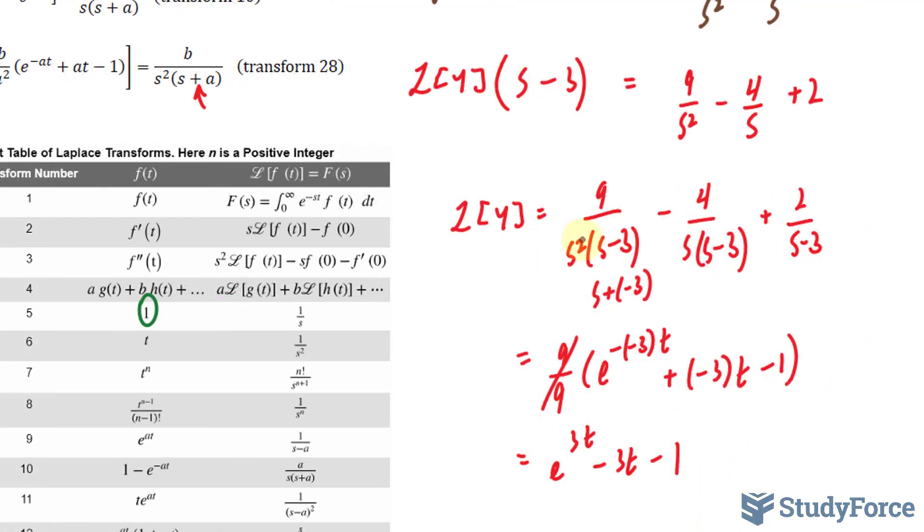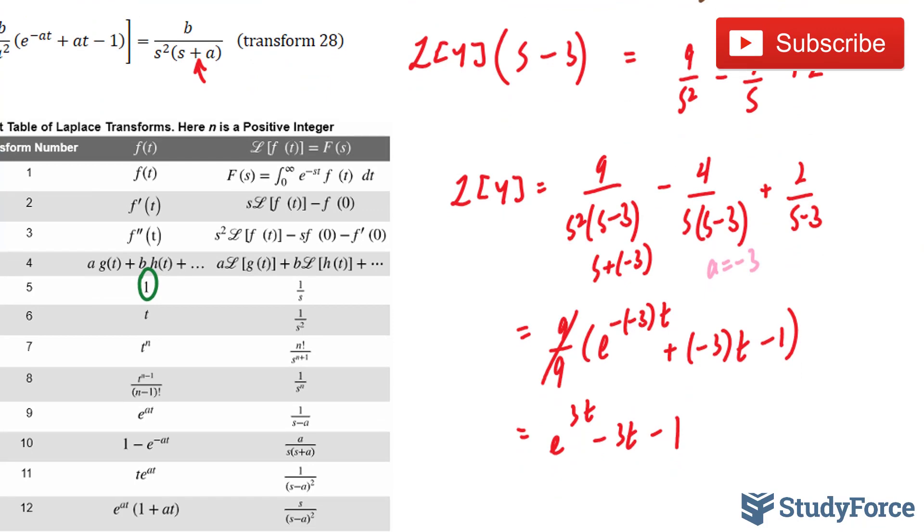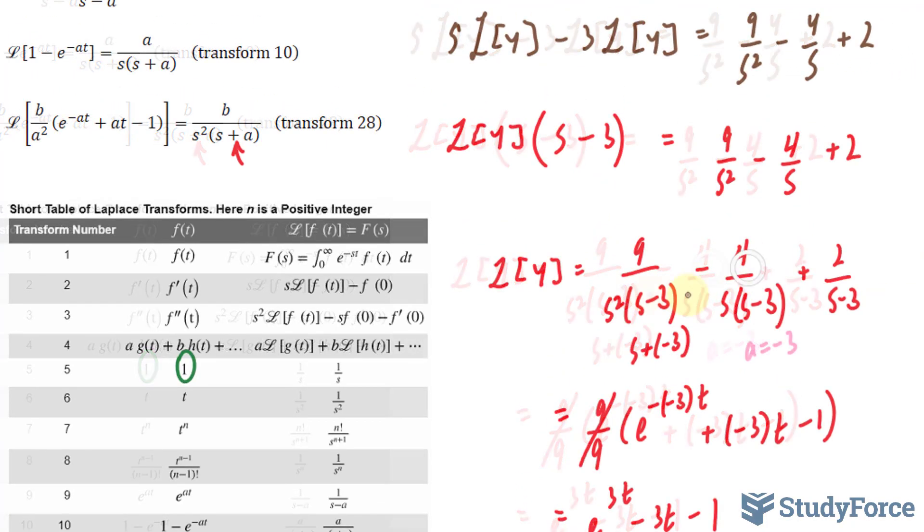All of this represents this term. Now this term: we have −4/(s(s − 3)). Like I mentioned, this matches transform 10. My a value will be, again, −3, and there's a difference here. This should be a 3, although we have a 4. We'll compensate for that in a moment.